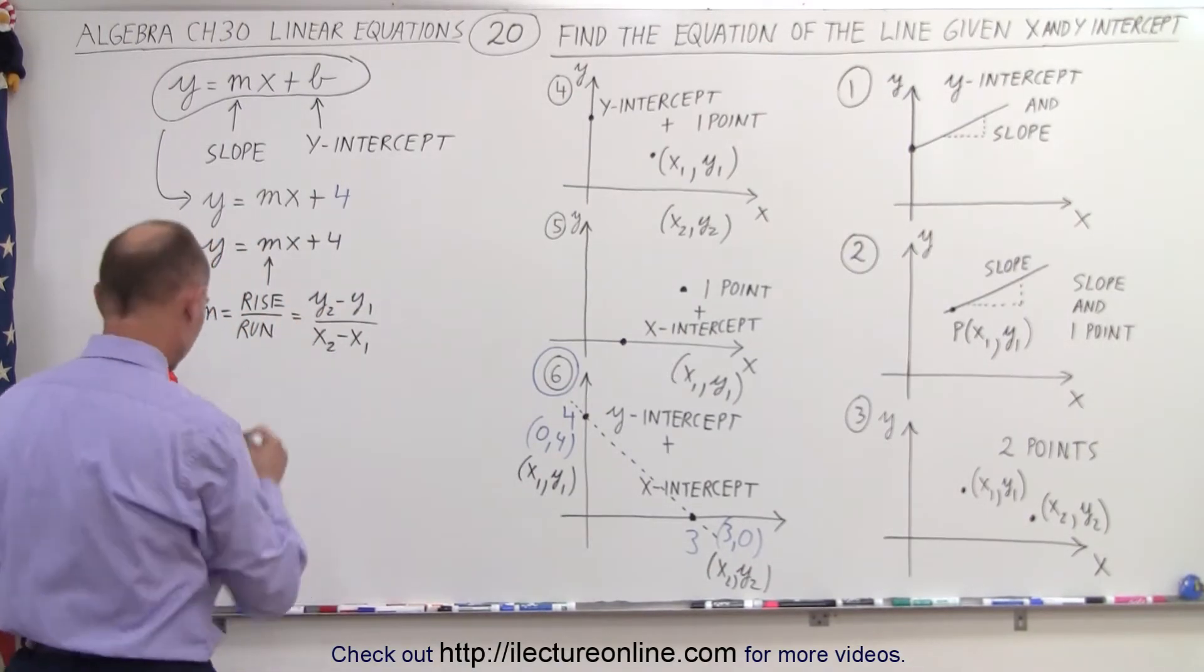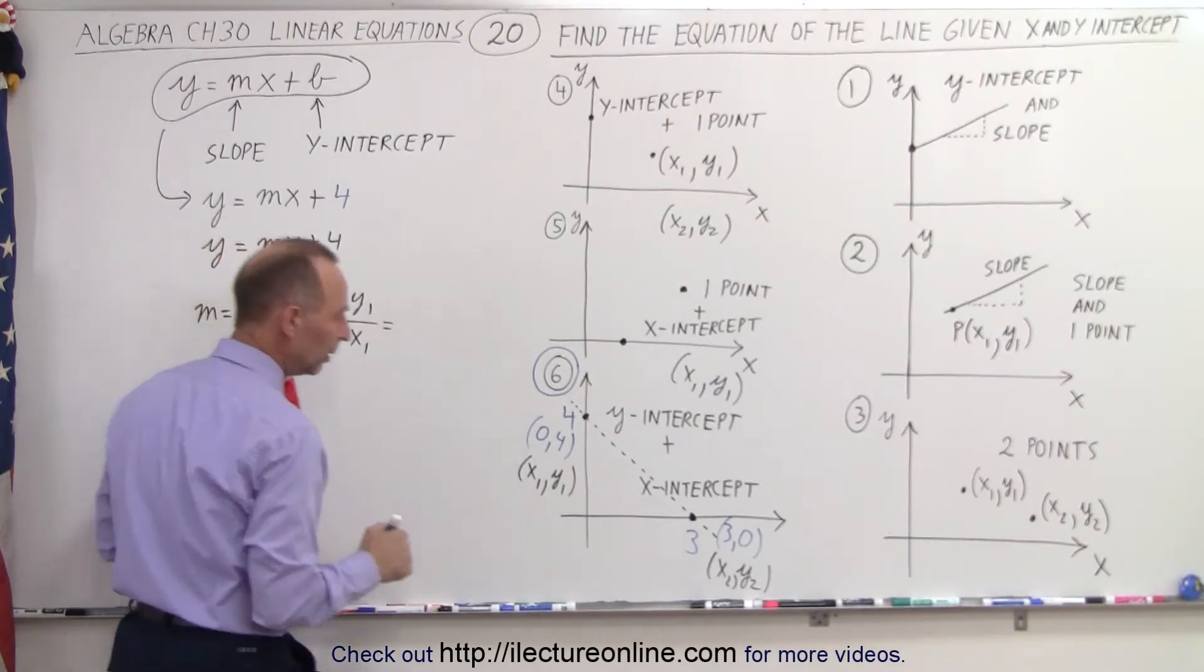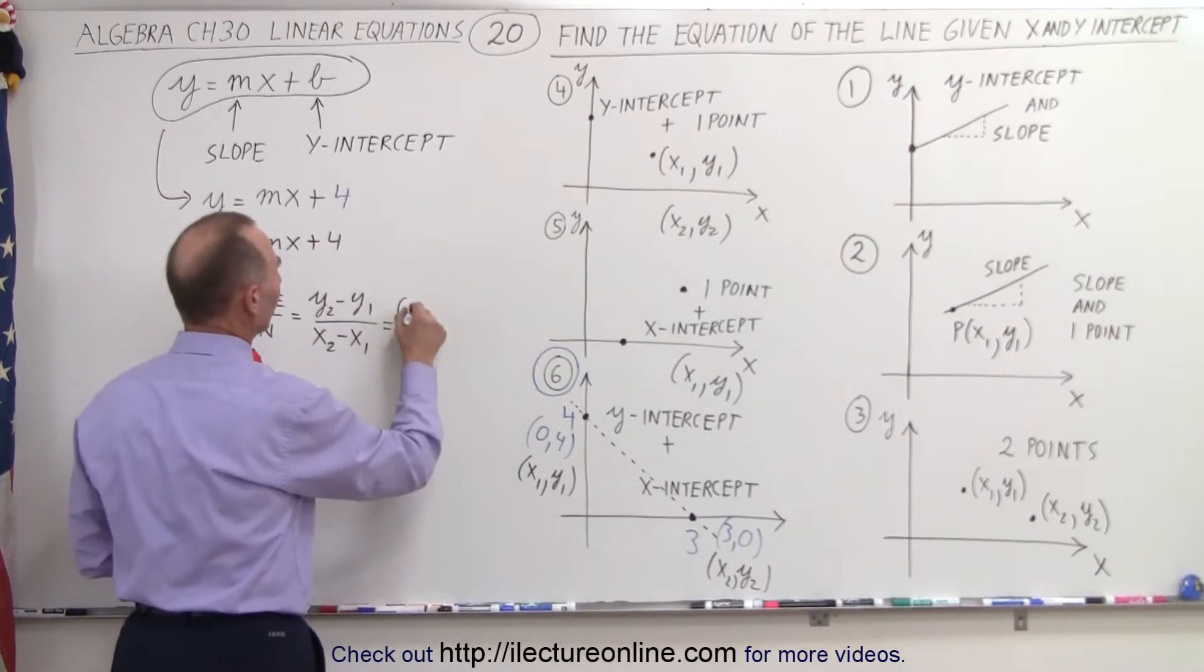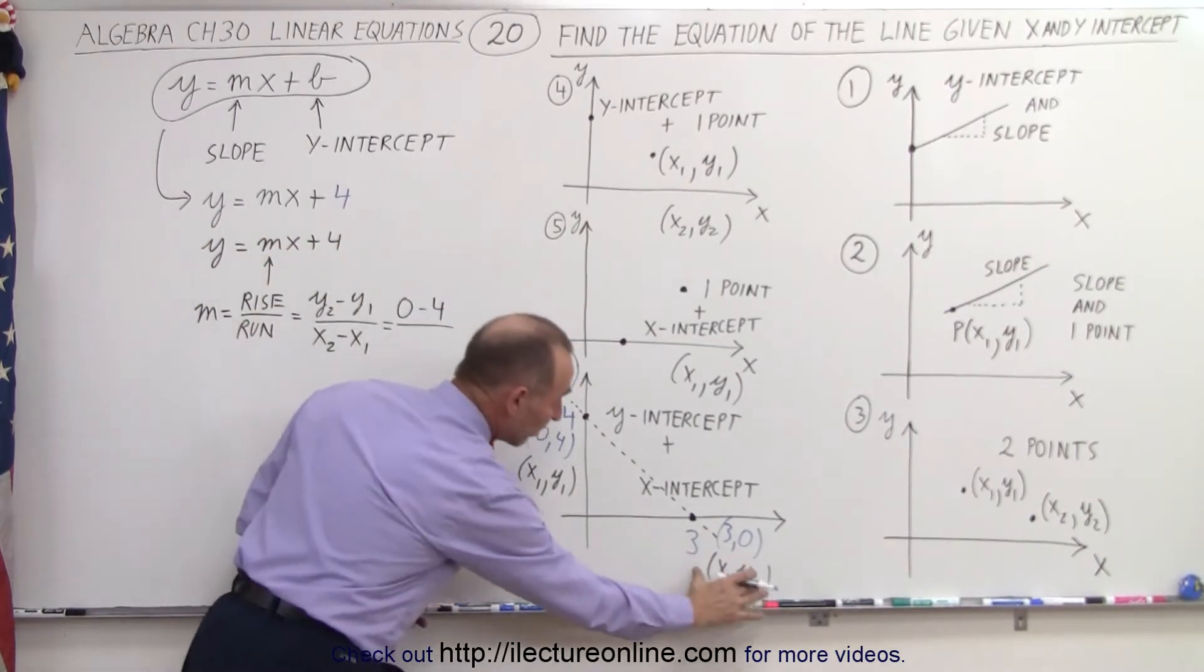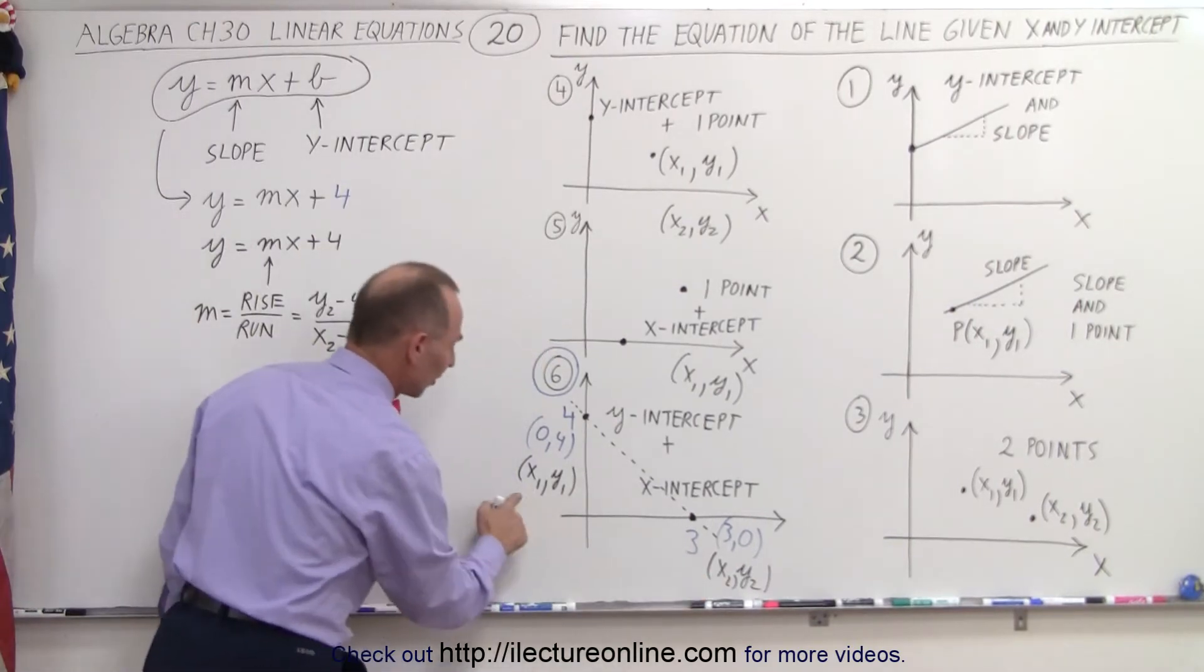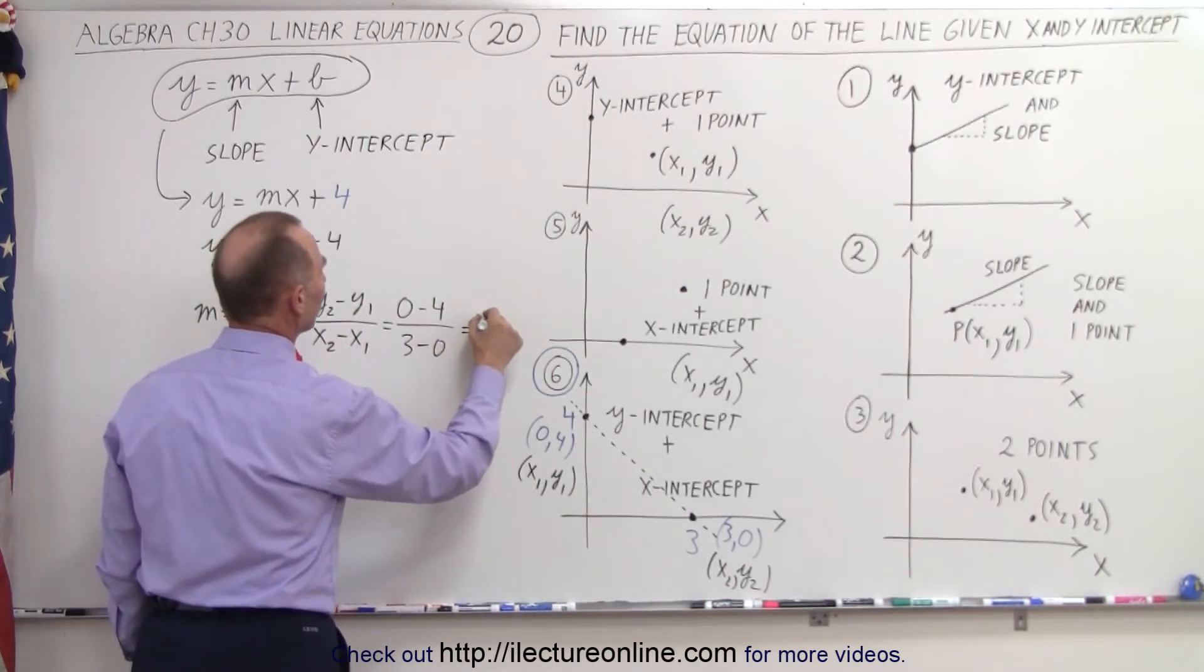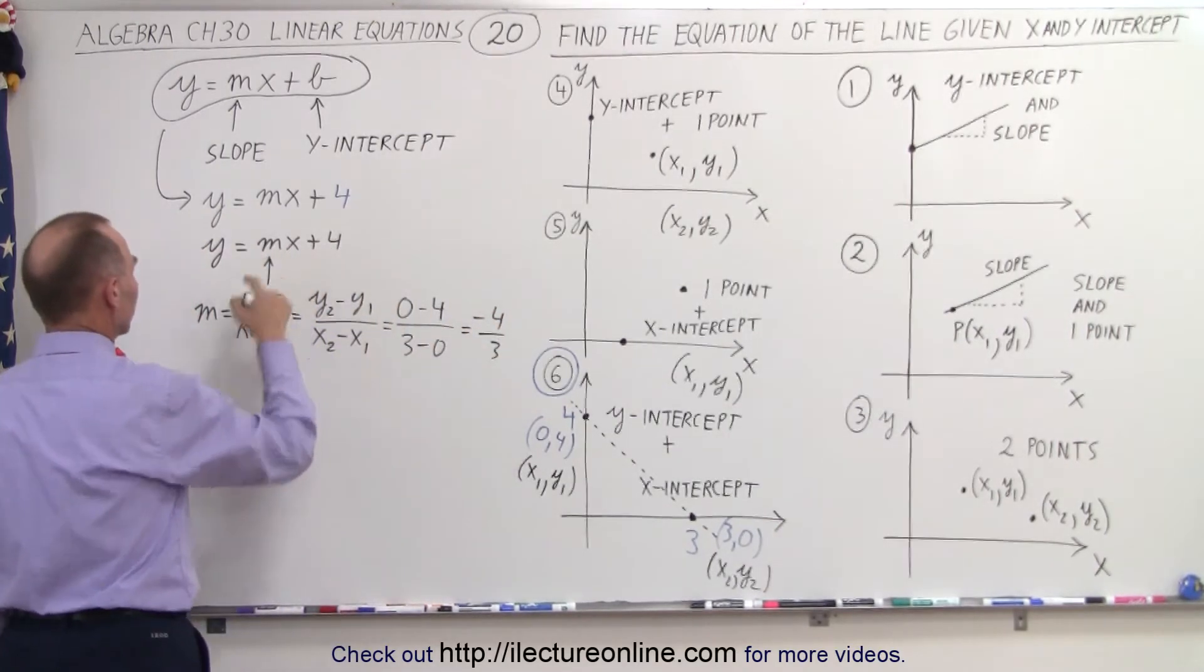So now, we're going to plug those values in and see what we get. So this is equal to y2 minus y1, which is 0 minus 4. Notice it makes it a lot easier when you label them with x1, y1, x2, y2, so we don't get lost. And then in the denominator, it's x2 minus x1, so it's 3 minus 0. So here we get minus 4 over 3. And that's the slope that needs to be plugged in right here.